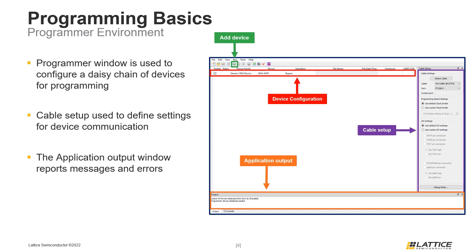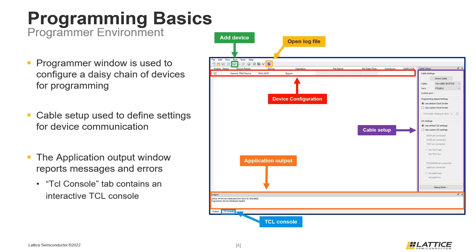Near the bottom of the programmer window is the application output. As the programmer tool is used, messages, reports, and errors for the current programming session will appear in this area. The programmer tool also saves a more detailed version of the console messages in a log file. To view the log file, select the log icon, or select View from the menu bar and then Log from the drop-down. The programmer tool also contains a Tcl console. To open it, select the Tcl console tab from the bottom of the programmer window. This switches the active view to the Tcl console, which can be used for executing scripts and custom Tcl commands.